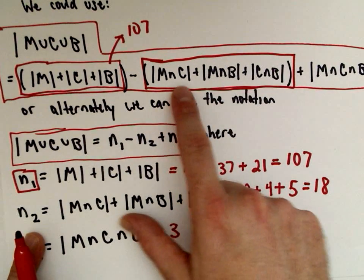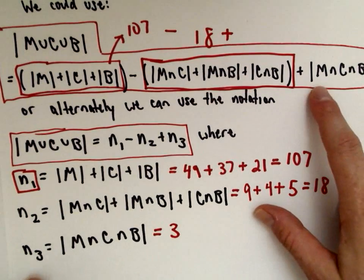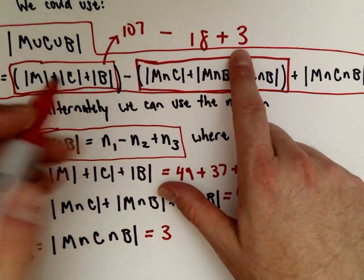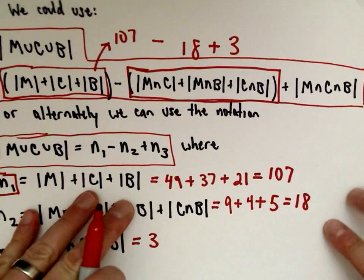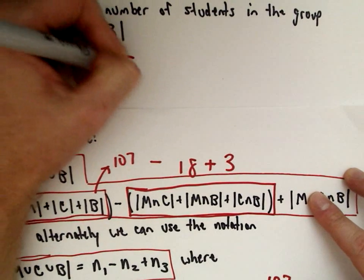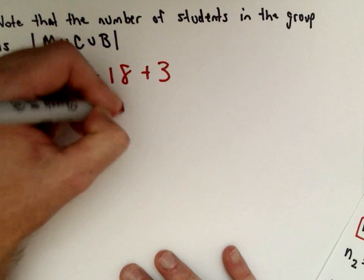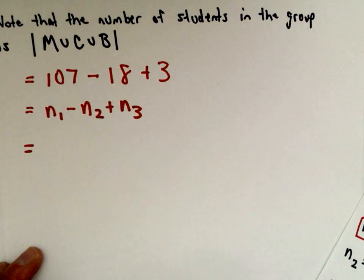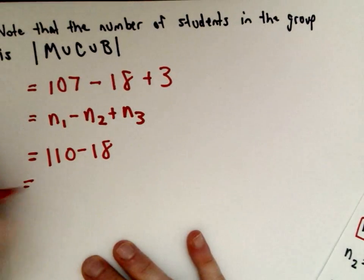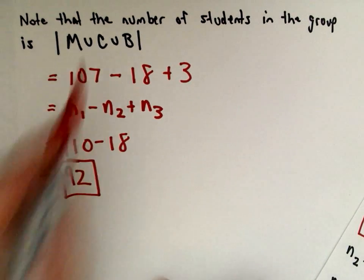So N2 is 18. We've got 107 minus 18 plus 3, which is N1 minus N2 plus N3. Doing the arithmetic: 107 plus 3 gives us 110, and 110 minus 18 gives us 92. So there are 92 students total who are studying Math or Chemistry or Business.